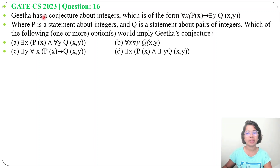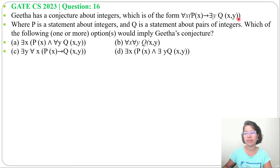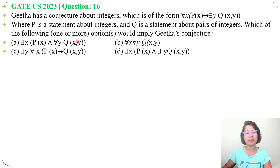Let's solve one previous question of mathematical logic. This question was asked in GATE year 2023, question number 16. Githa has a conjecture about integers which is of the form: for all x, P(x) implies there exists y, Q(x,y), where P is a statement about integers and Q is a statement about a pair of integers. Which of the following one or more options would imply Githa's conjecture?